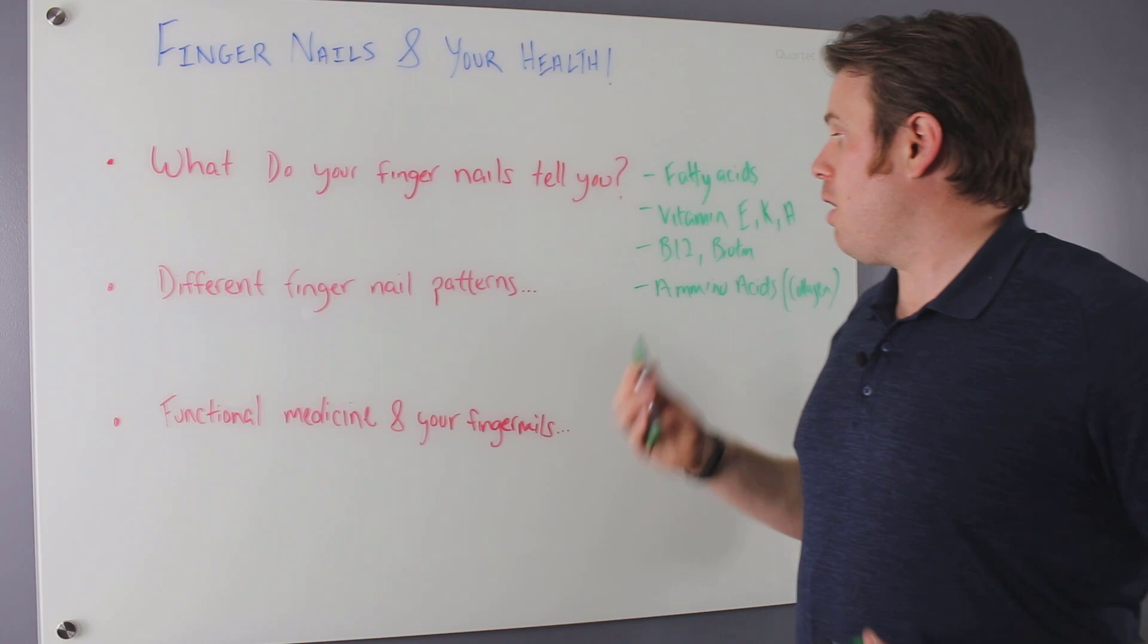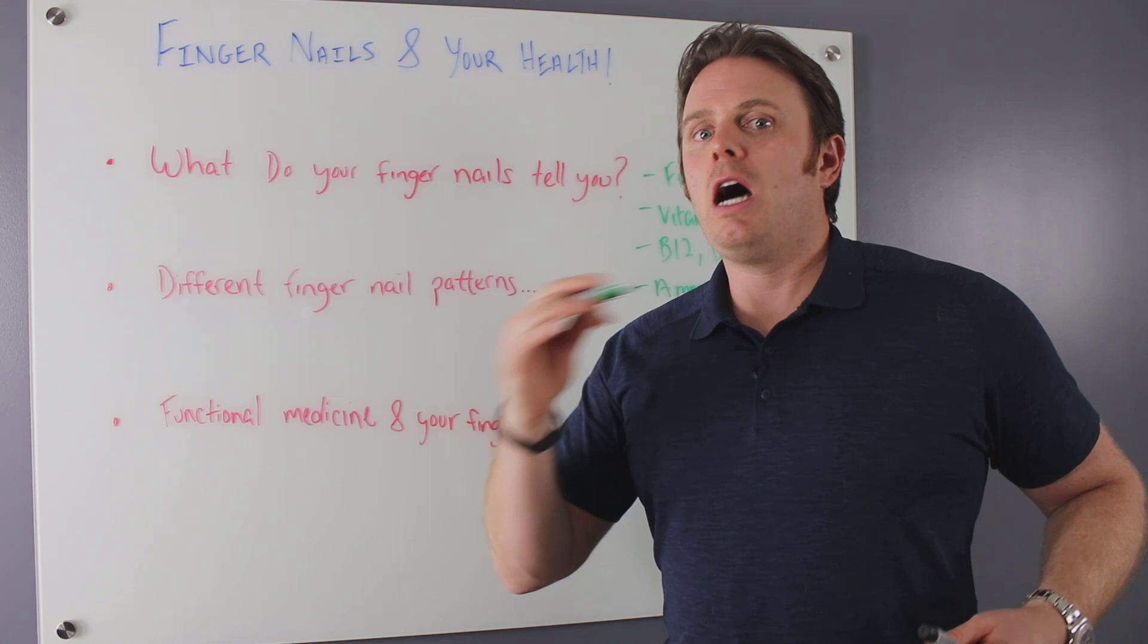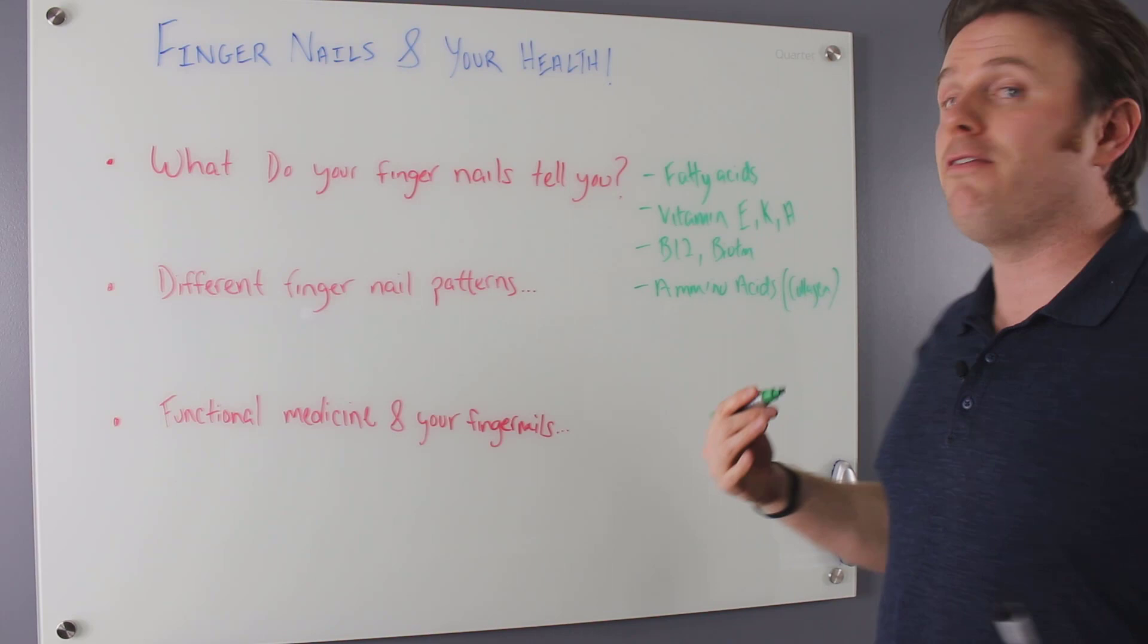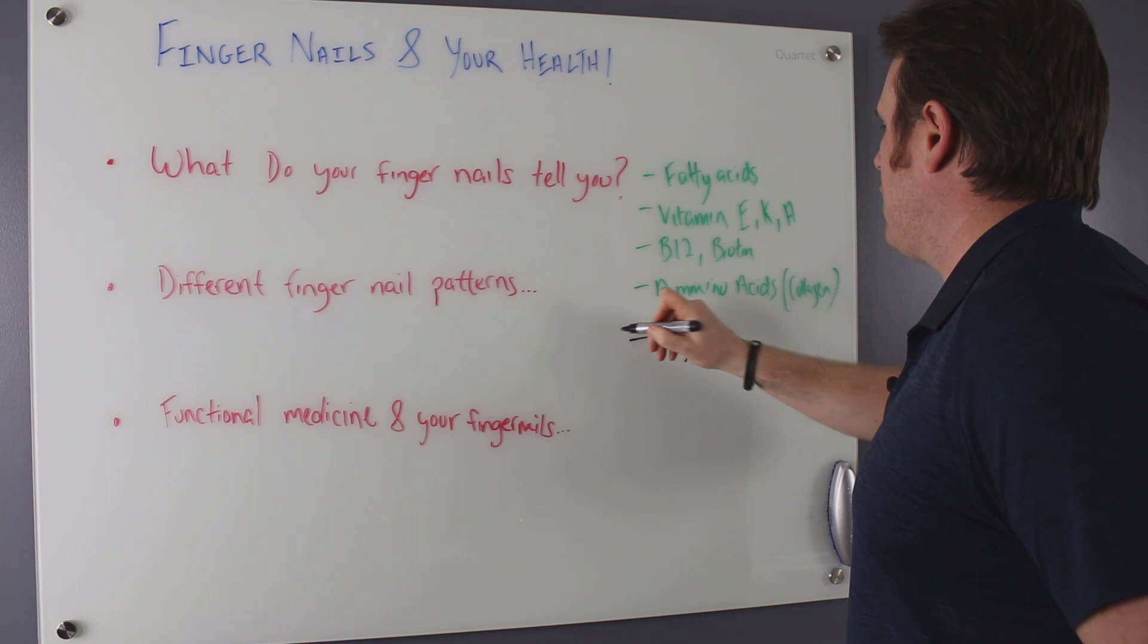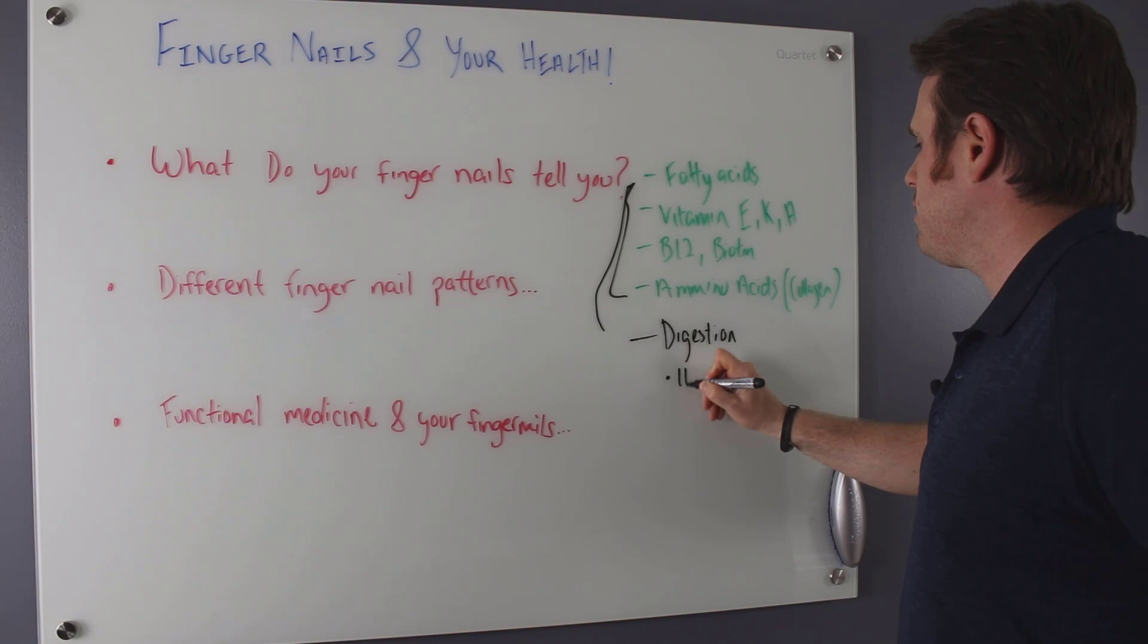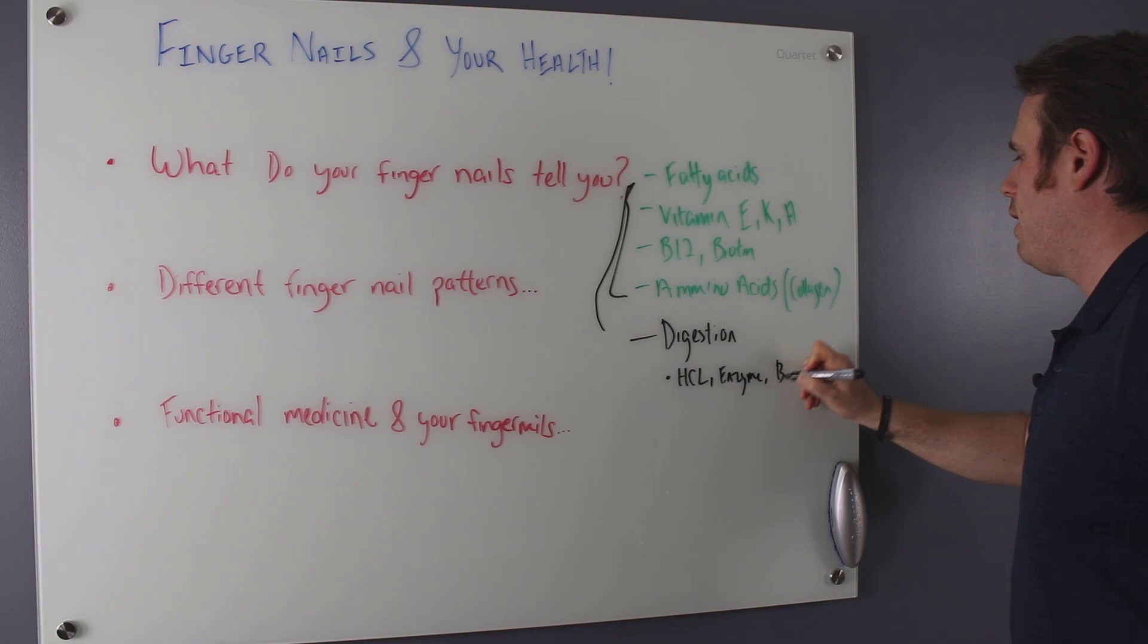And then obviously the next thing, if we're eating those foods and we can't break them down, hydrochloric acid, enzymes, and bile salts are really important because if we don't have the digestive building blocks, that's really big. So of course, a big one is digestion. We have to make sure we have the ability to break all these things down and that's going to be hydrochloric acid, enzymes, and then bile.